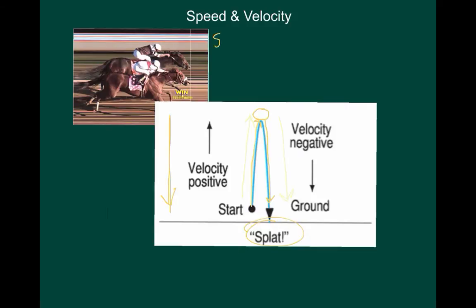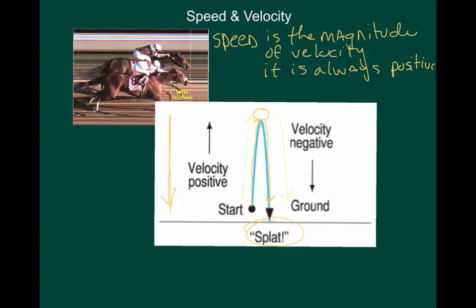Speed is the magnitude of velocity. Speed is always positive. Velocity, on the other hand, has a sign.